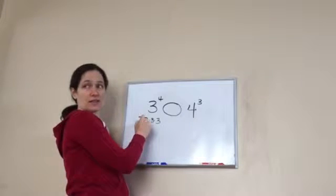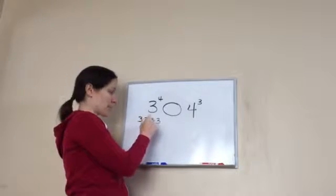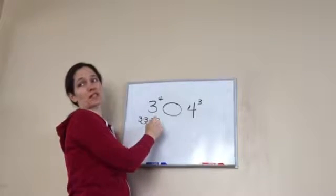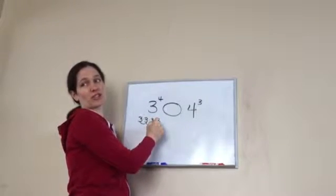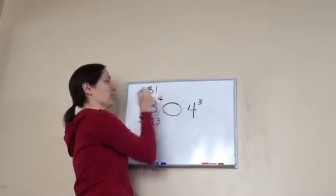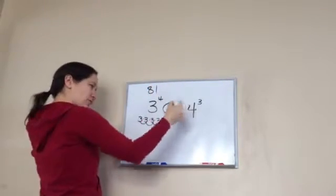Yeah. Three times three is nine. Nine times three is 27. 27 times three is 81. Only because I looked. Okay? So, this one equals 81, just so you know.